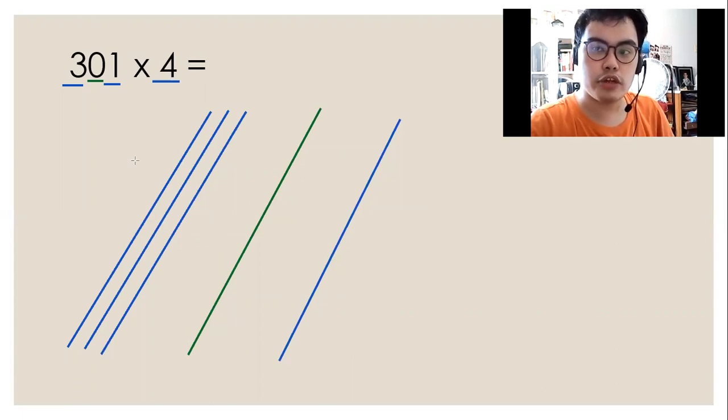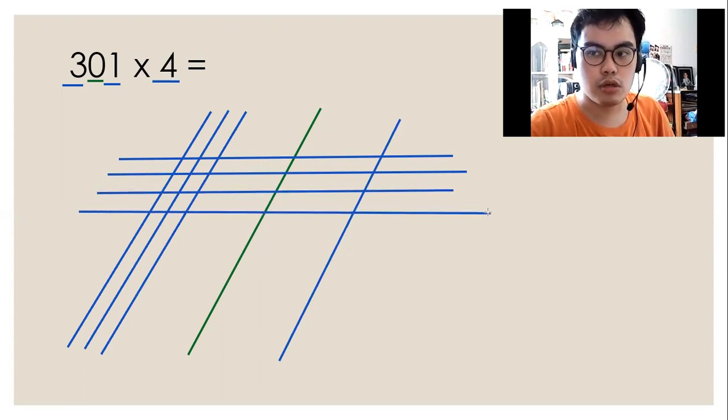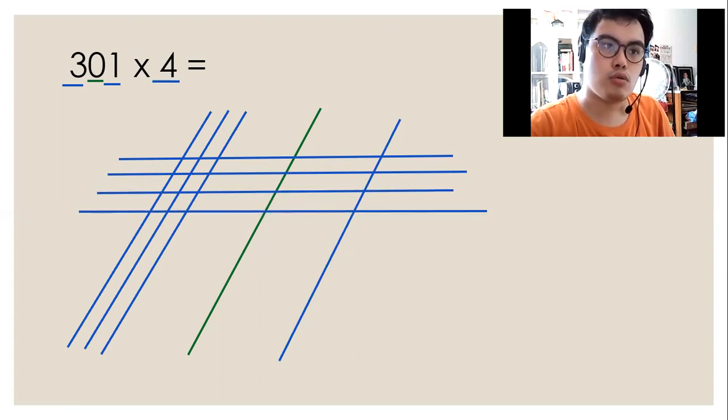For the second factor, we're going to form lines with a horizontal orientation. Now we have formed these lines. We need horizontal and vertical so we can form points of intersection. That's what we'll use to find the product.